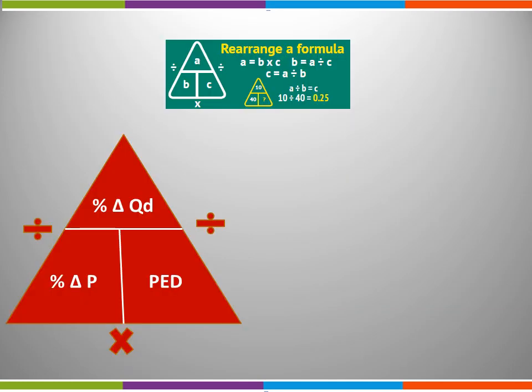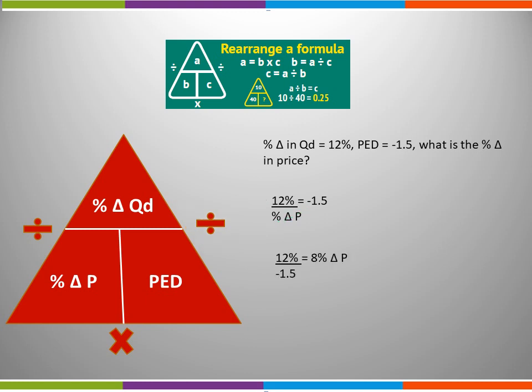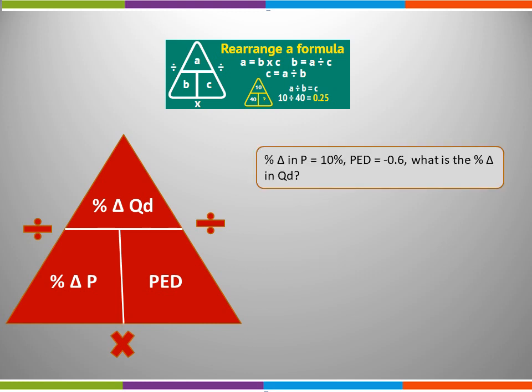We can also rearrange the formula. If we're given any two of the three variables, we can calculate the third variable. For example: percentage change in quantity demanded equals 12%, PED equals minus 1.5 — what is the percentage change in price? Well, we know the 12%, the top of the formula, and we know the answer, minus 1.5 PED. Therefore, to calculate the change in price, we simply divide these two figures. This gives us our answer: the percentage change in price was 8%.